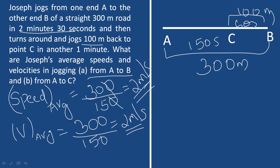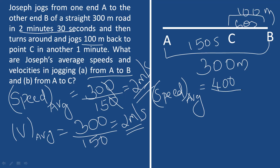Average speed formula is total distance divided by total time taken. Total distance equals 300 meters (A to B) plus 100 meters (B to C) equals 400 meters. Divided by total time of 210 seconds. Average speed from A to C equals approximately 1.9 meters per second.